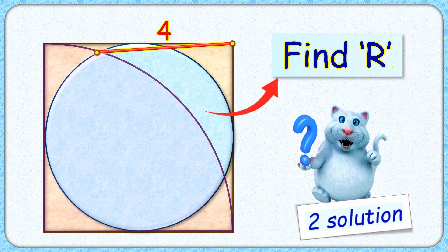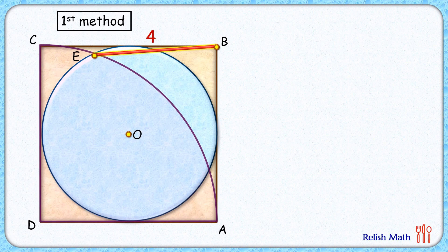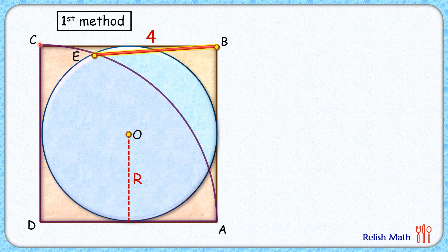Let's check the solution. We'll solve it by two ways: our first method will be using the similar triangles approach, and the second method will be using Apollonius theorem. For the first method, let's assume the radius of this blue circle is r centimeters. Thus its diameter will be 2r, and therefore CD — the side of the square — is 2r centimeters. But CD is also the radius of this quarter circle, so DE, which is also a radius, is 2r.